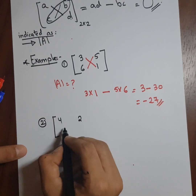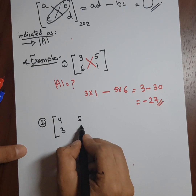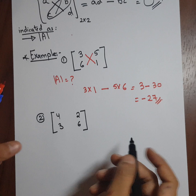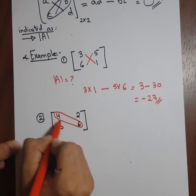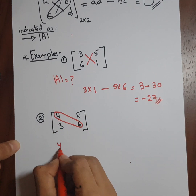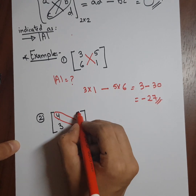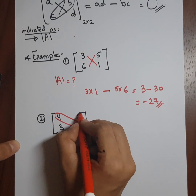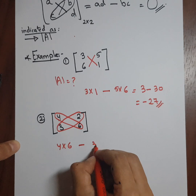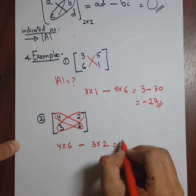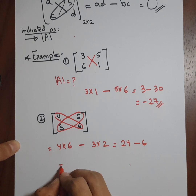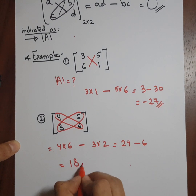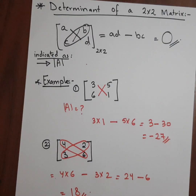Similarly I'll take another example. I have a matrix with elements 4, 2, 3, 6. I'll cross multiply and subtract: 4 times 6 minus 3 times 2, so I'll have 24 minus 6, and my answer would be 18. So this will be the determinant of a two by two matrix.